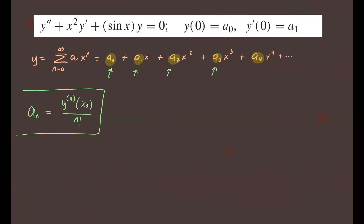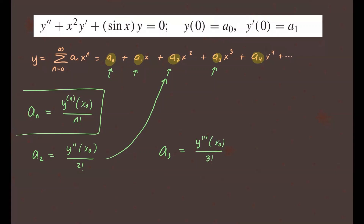The first two coefficients are the given initial conditions. For a₂, using this formula, it's defined as the second derivative evaluated at x₀ divided by 2 factorial. For a₃, we use the third derivative evaluated at x₀ over 3 factorial. For a₄, we use the fourth derivative evaluated at x₀ over 4 factorial — and that's as far as we'll go for this problem.